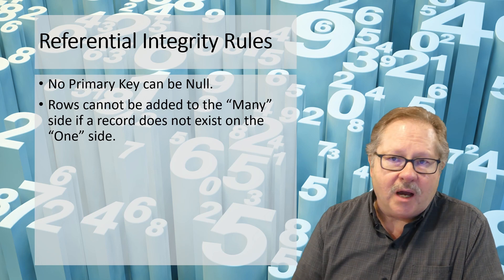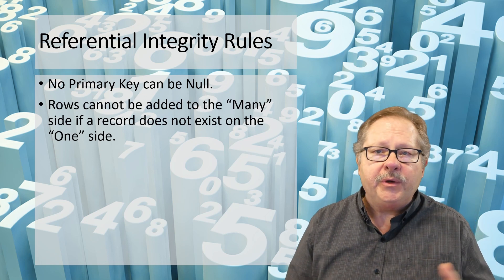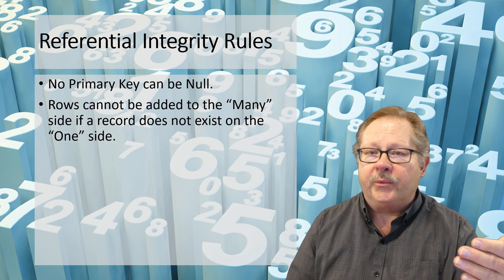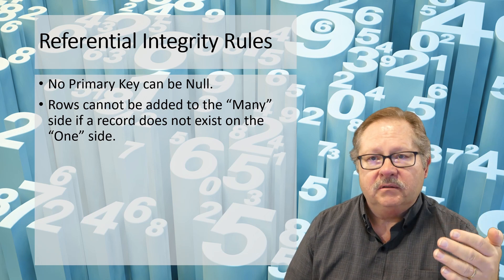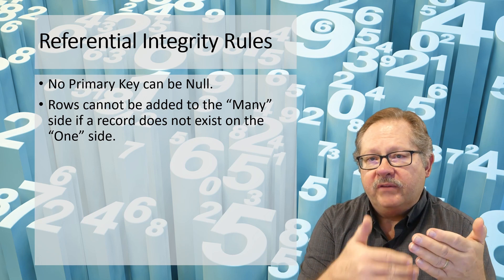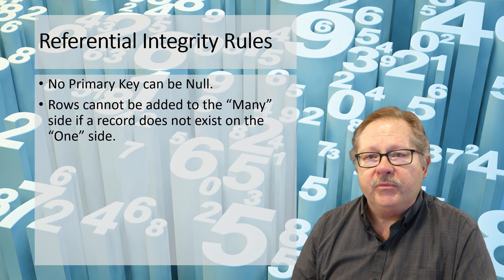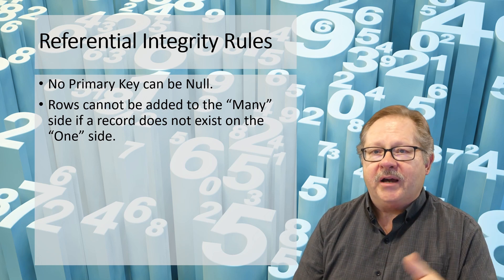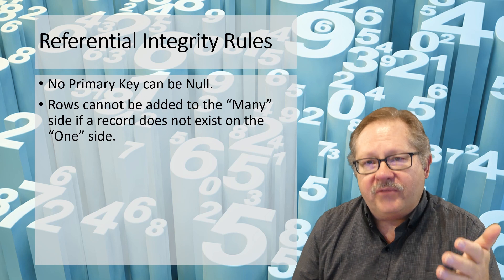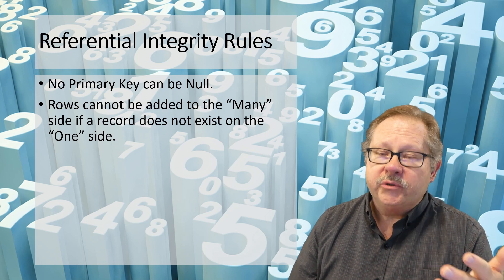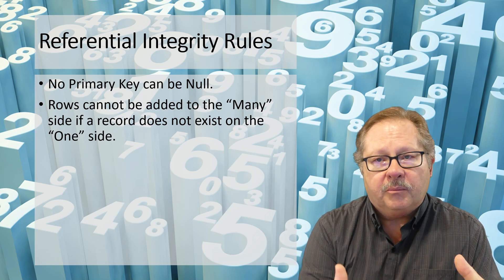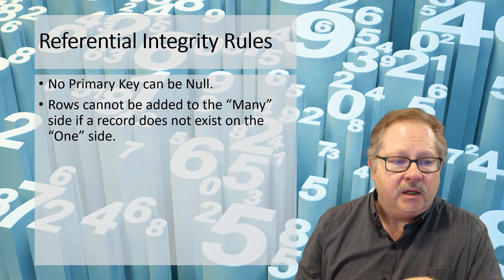The next rule is that rows cannot be added to the many side until there is a value in the one side. For example, if you have an invoice with a header record as your one side, you only have one invoice for this particular order. You have the invoice header and then detail records under it, so you have to have the header filled out before you start adding detail records. You want to enforce referential integrity so that the order gets filled out properly and everything can be attached properly in the database.